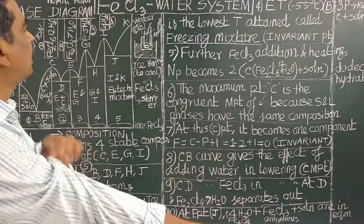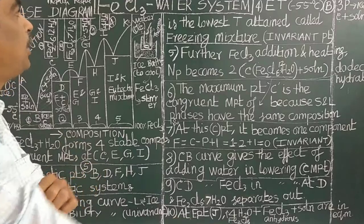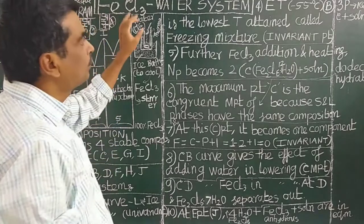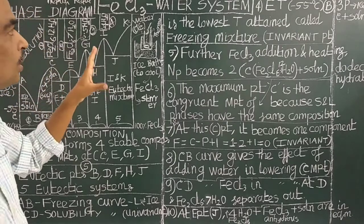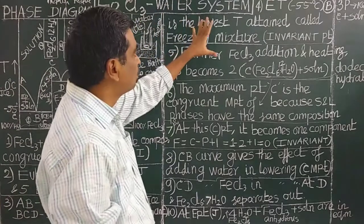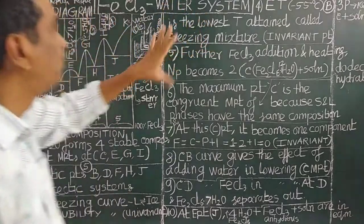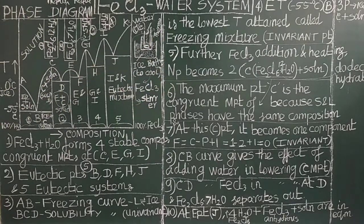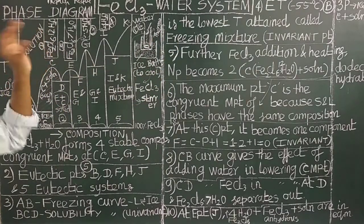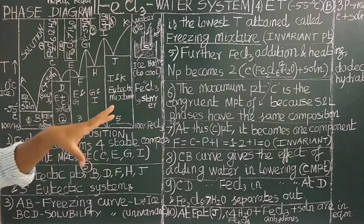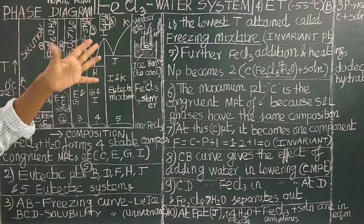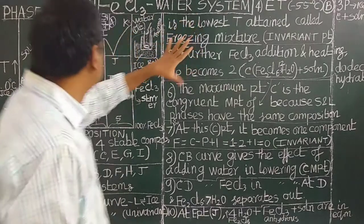Good morning. Let us study today the ferric chloride-water system. It is an interesting system — a congruent melting system, a congruent melting point system. This is similar to the potassium iodide-water system, which is a eutectic system, whereas this is a congruent melting system.